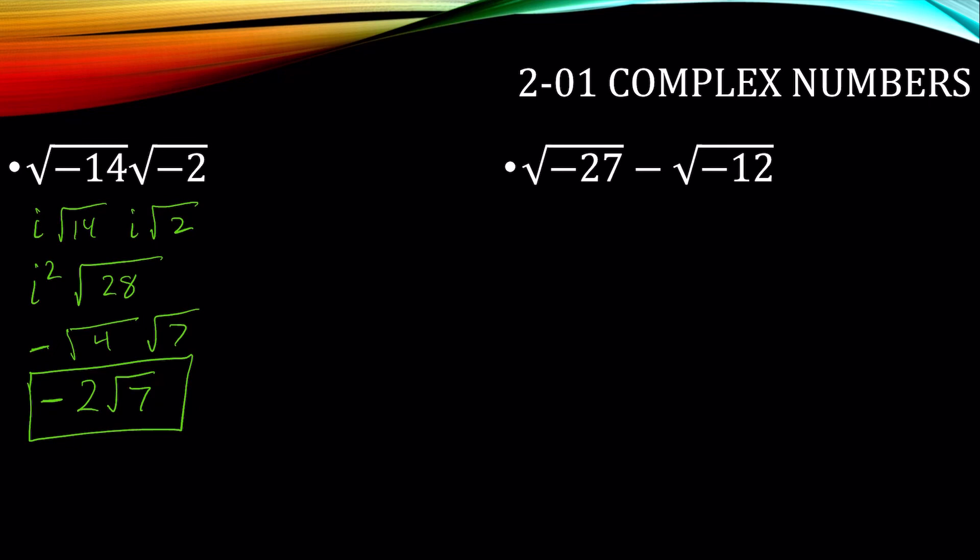Alright, let's subtract these. Remember, when you add or subtract, they have to be the same terms. Combined like terms. So we need to simplify these first. Negative 27: we have the i for the negative, and 27 could be 9 times 3. For the negative 12, the negative is i, and then 12 could be 4 times 3. The square root of 9 is 3, so this is 3 square root of 3i minus. The square root of 4 is 2, the square root of 3i. Usually the letters go at the end.